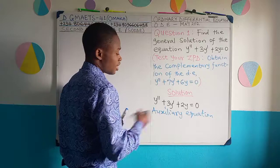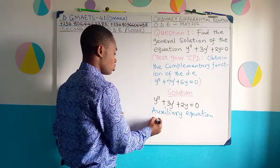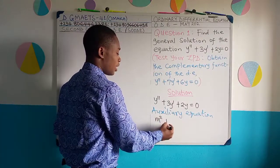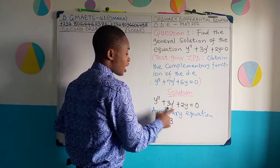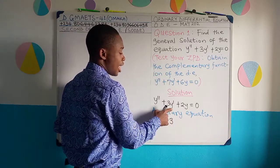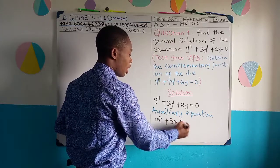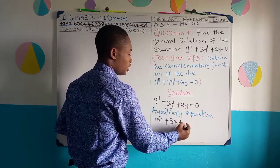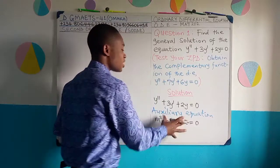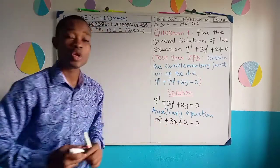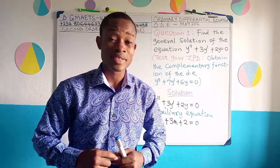This d² gives us m to the power 2. So we have m² plus — the coefficient here is 3 — so it's going to be 3 times m to the power 1, which is simply 3m. Then plus the coefficient 2, equal to zero. So this is the auxiliary equation, which is a quadratic equation. We shall now solve it.